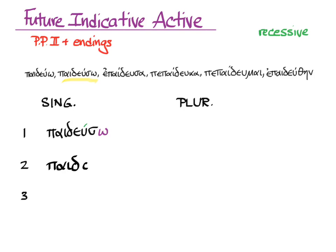Second person singular — stem, ending, accent: paideusace, you will educate. Third person singular: paideuse — stem, ending, acute on the second to last because the last is long. This means she will educate, or he will educate, or it will educate. And all of those could be 'she will be educating' if we want to stress the continuous aspect of the future.